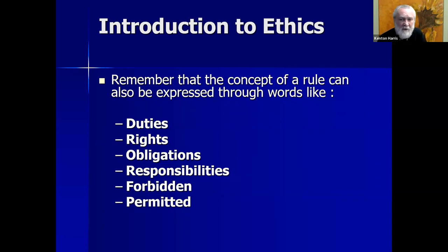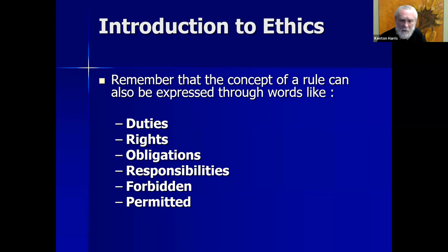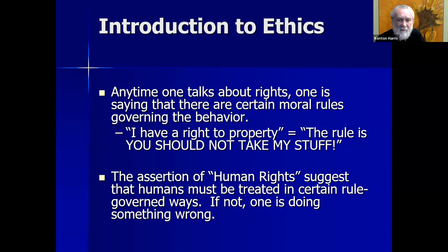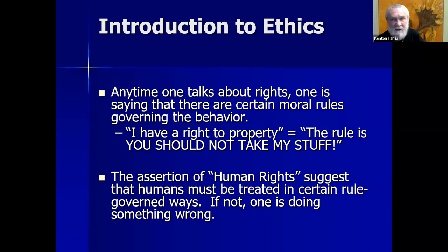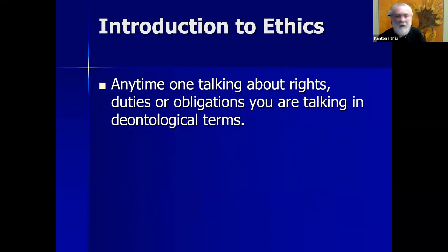The concept of a moral rule can be expressed through other words: duty, rights, obligations, responsibilities, what is forbidden or permitted. Any time one talks about rights, one is saying there's a certain moral rule governing behavior. If I said I have a right to property, that's another way of saying the rule is: you should not take my stuff. The assertion of universal human rights suggests that humans must be treated in certain rule-governed ways. Any time one's talking about rights, duties, or obligations, one's talking in deontological terms.